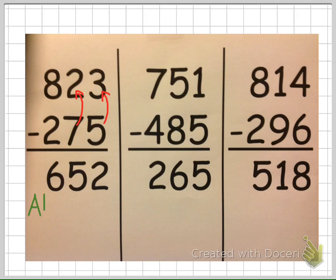The first number sentence contains a common error. This example was completed by subtracting from the bottom up. Don't be tricked by the larger digits of the bottom number in the ones and the tens place value. Always subtract starting from the top.